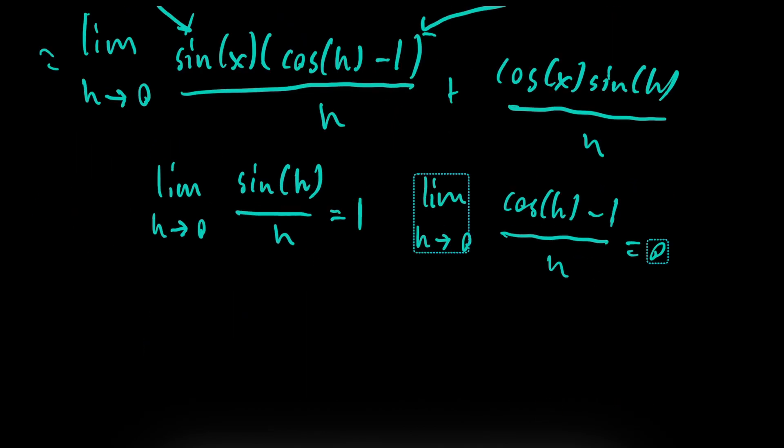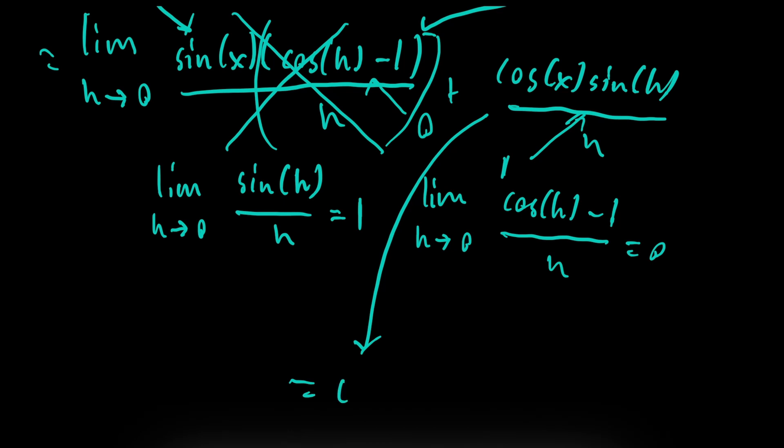So as a result, this in turn would approach 0. This would approach 0, which would end up canceling out this term entirely. And this would end up approaching 1. So the final limit is going to be equal to cosine of x.